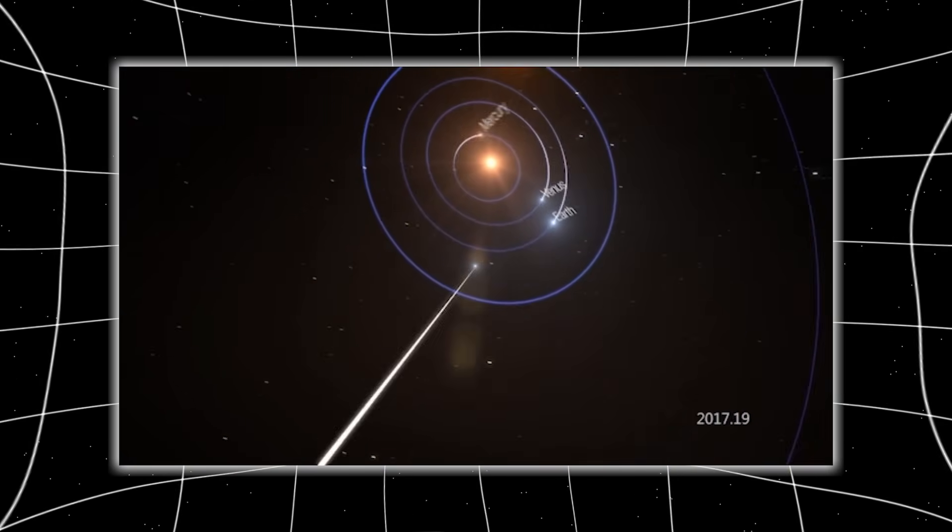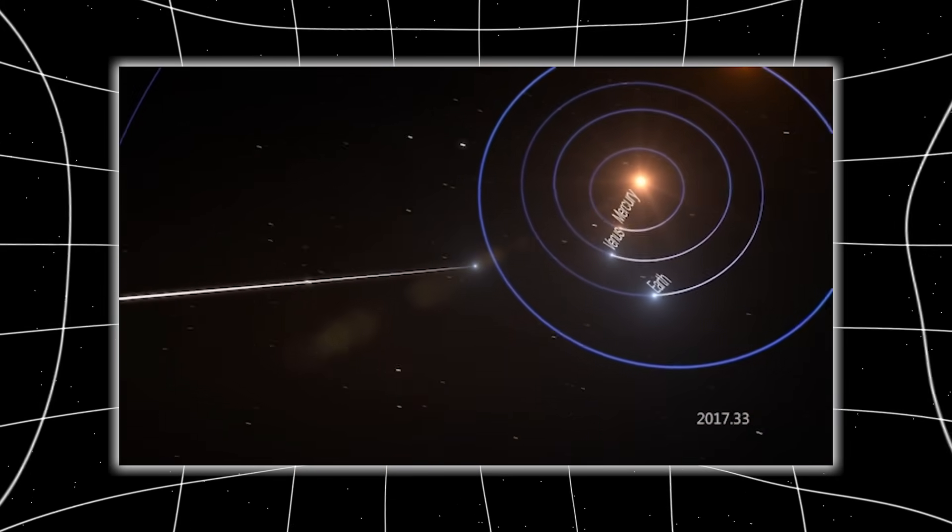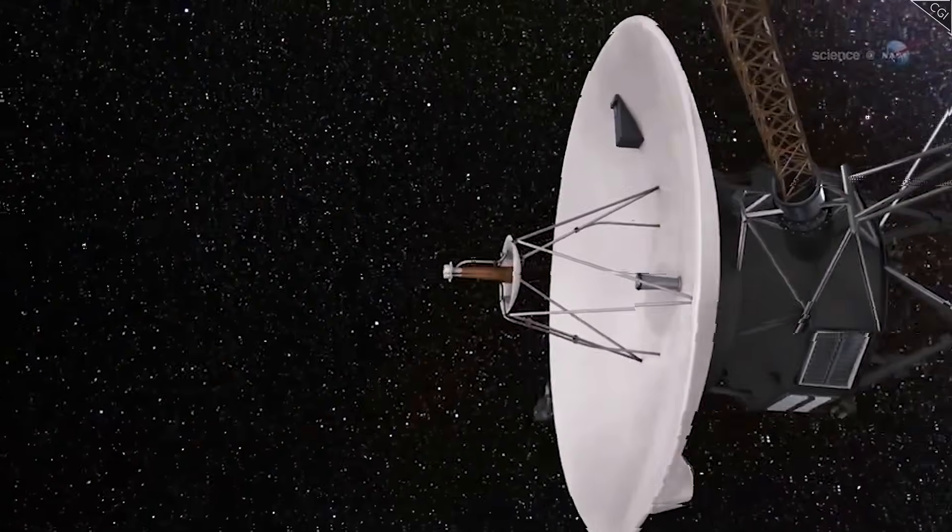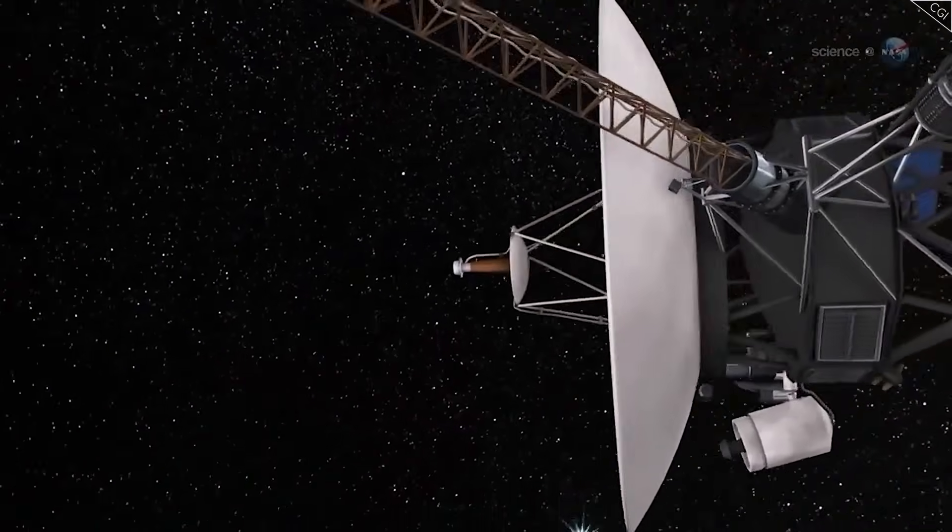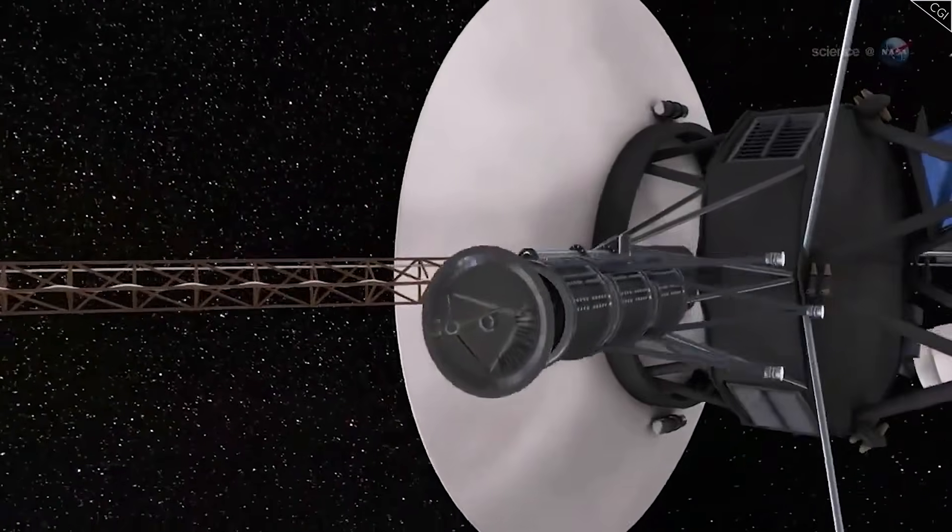Something changed when these two trajectories nearly touched. And now, the world is left wondering. Did Voyager 1 really make contact with something not from our world? Or did something else, something no one expected, respond first?